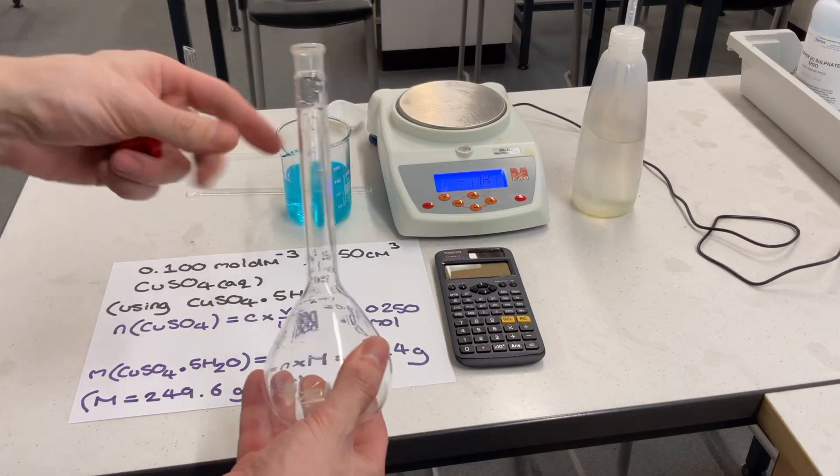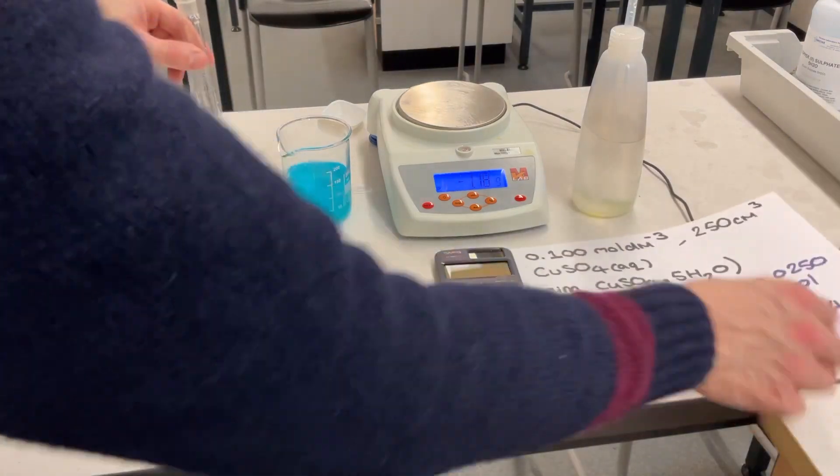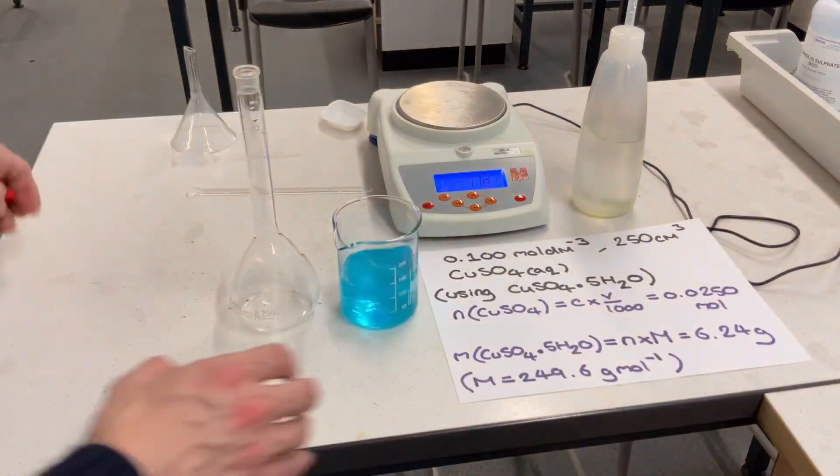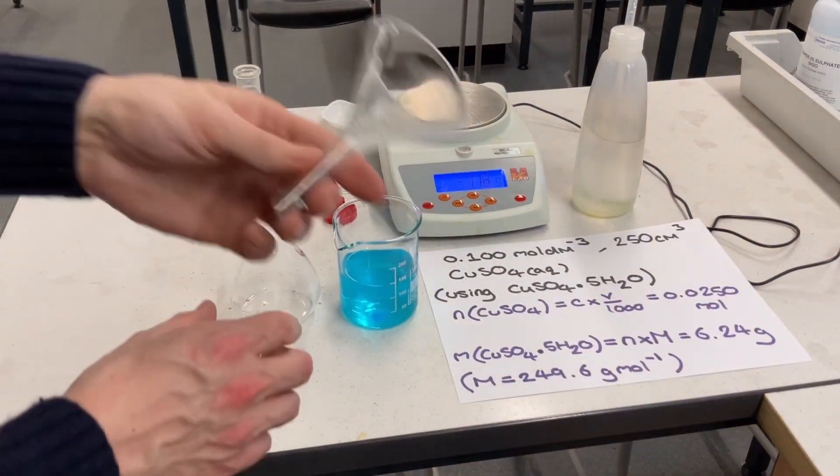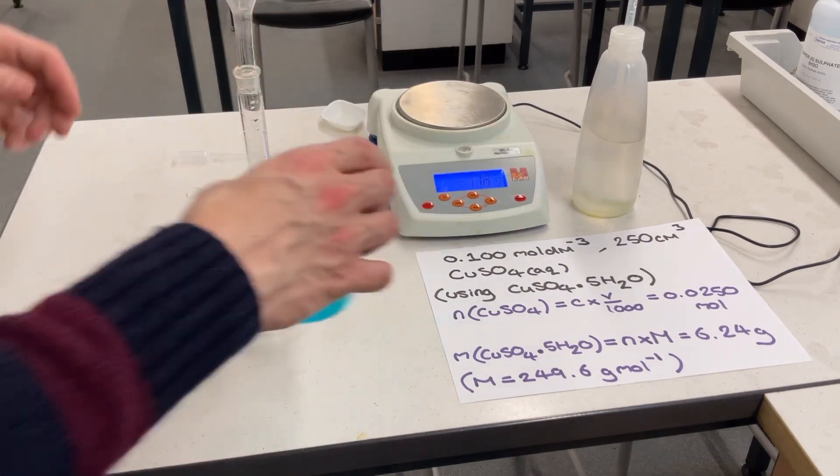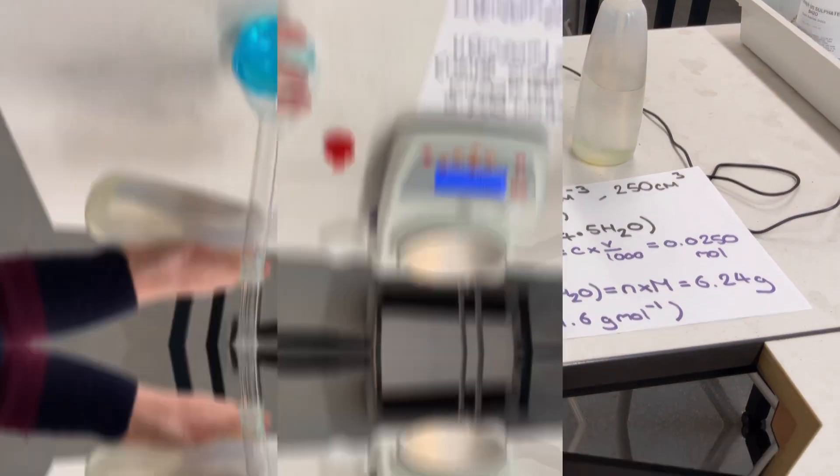Step 3: Since I'm preparing a 250 centimetre cubed standard solution, I now use a funnel to transfer my solution into a 250 centimetre cubed volumetric flask.